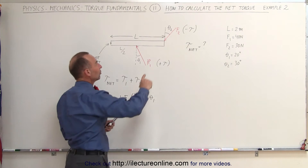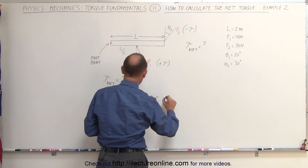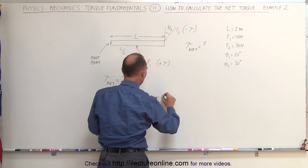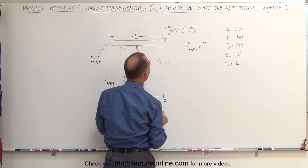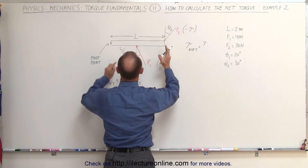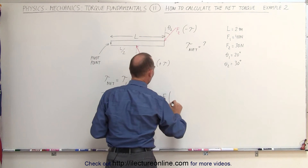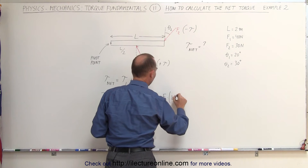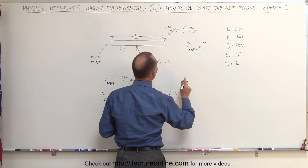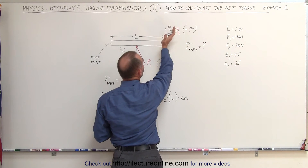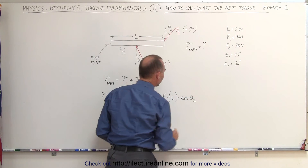Minus — because this will cause a negative torque to exist — minus F2, times the distance from the pivot point to where the force is acting, which is the full length of the beam L, times the cosine of the angle between the perpendicular and the direction of the force, which is the cosine of theta sub 2.